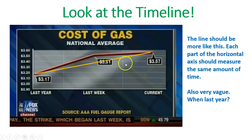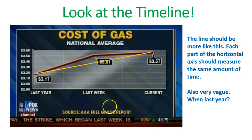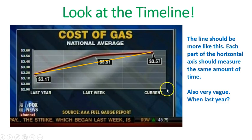If last year is here, last week should be up here, increasing by eight cents in a week. Being vague and inconsistent on the horizontal axis is just as much of an offense as being vague on the vertical axis. They could have picked any time last year to make the graph look like what they wanted it to look like.